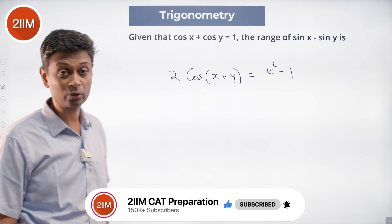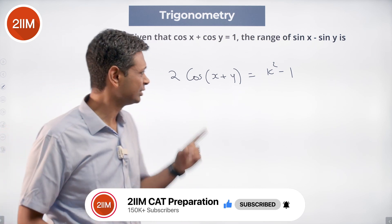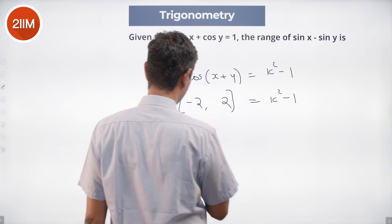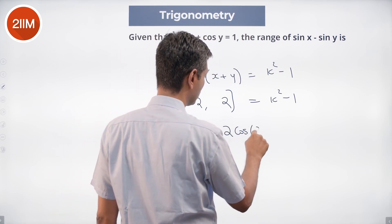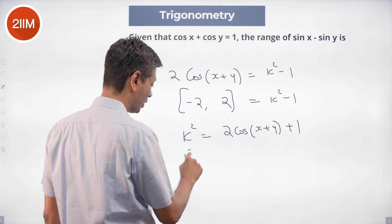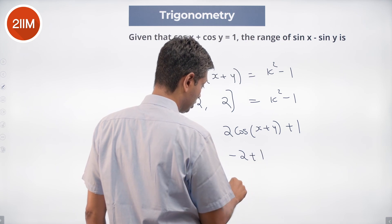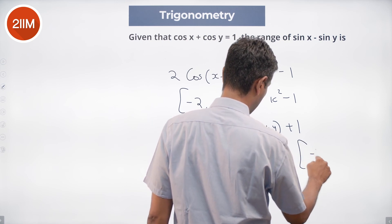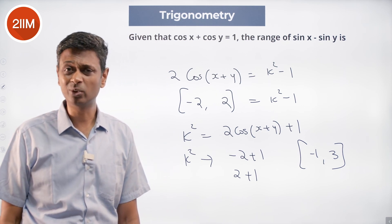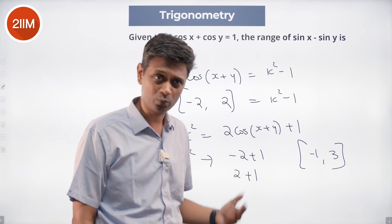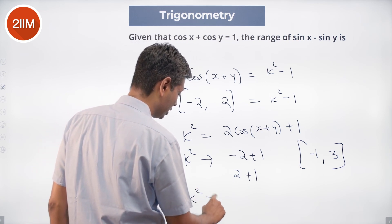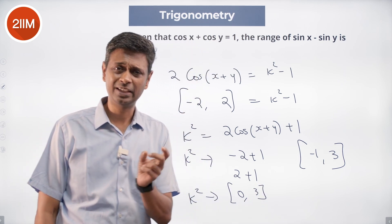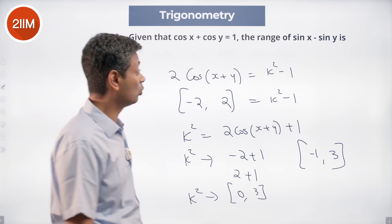2 cos of x plus y equals k squared minus 1. Cos of x plus y can go from minus 1 to plus 1, so this fellow can go from minus 2 to plus 2, equal to k squared minus 1. So k squared is 2 cos of x plus y plus 1, and k squared can go from minus 2 plus 1 to plus 2 plus 1. Since k squared cannot be negative, k squared ranges from 0 to 3.